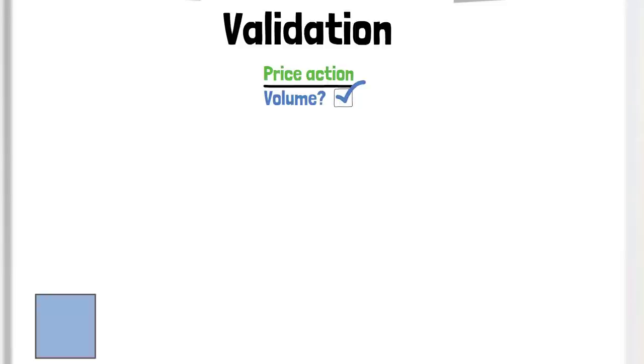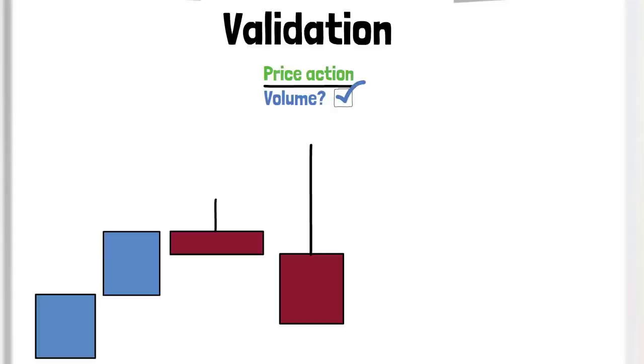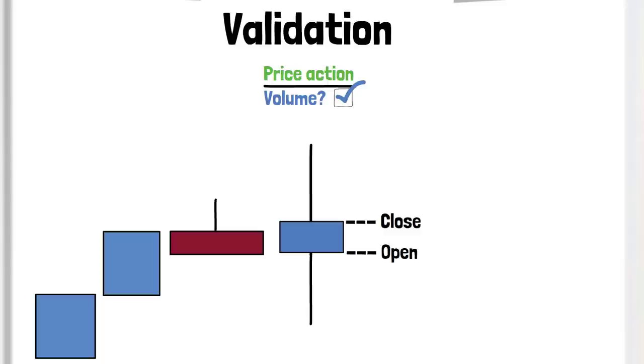First, we need to understand how a candle develops. The candle will open in a neutral position, often at the close of the previous candle. During the course of trading activity, the candle will usually fluctuate whilst the bulls and bears battle against each other. In this example, the bulls win, with price closing higher than the open.